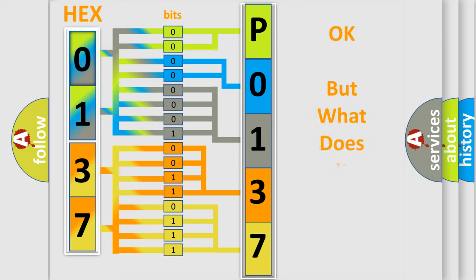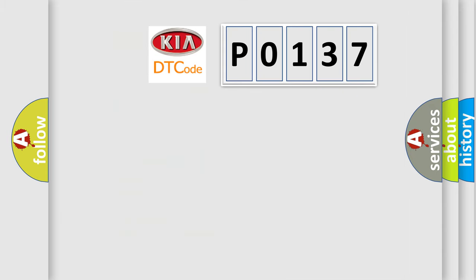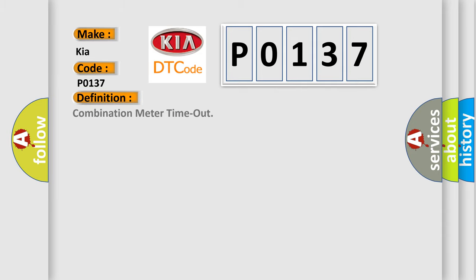We now know how the diagnostic tool translates received information into a more comprehensible format. The number itself does not make sense to us if we cannot assign information about what it actually expresses. So, what does the diagnostic trouble code P0137 interpret specifically for Kia car manufacturers? The basic definition is: Combination Meter Timeout.